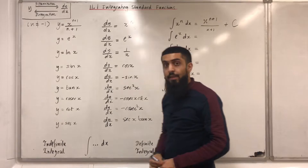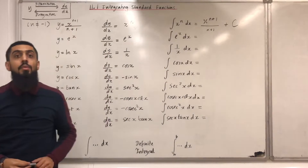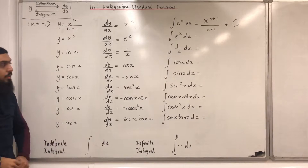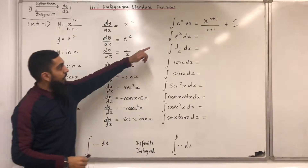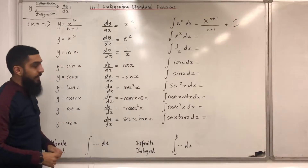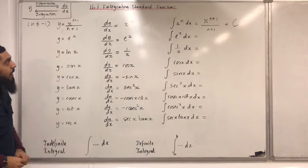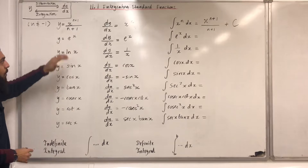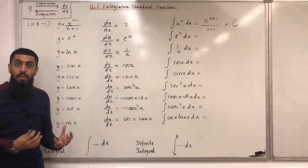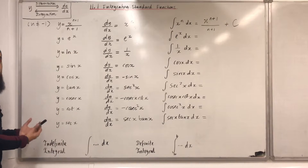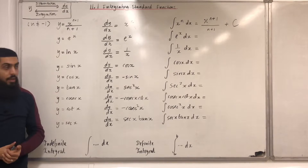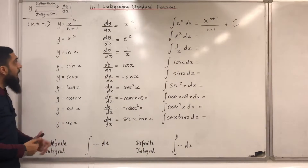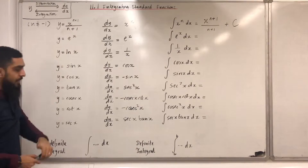C is the constant of integration. You need to include plus c if you are evaluating an indefinite integral. Next, the integral of e to the power x with respect to x. dy/dx equal to e^x gives us y equal to e^x. Going from dy/dx back to y is called integration. Therefore, the integral of e^x with respect to x will be e^x plus c.